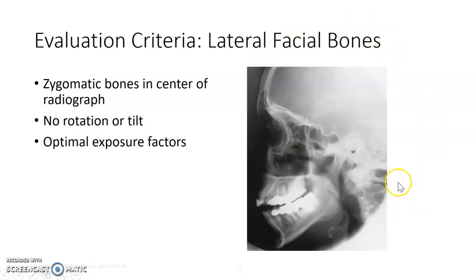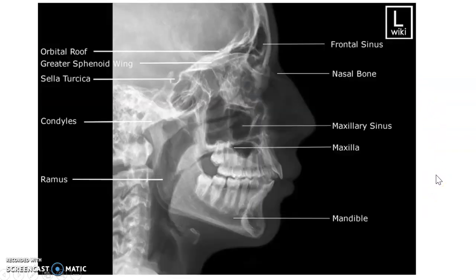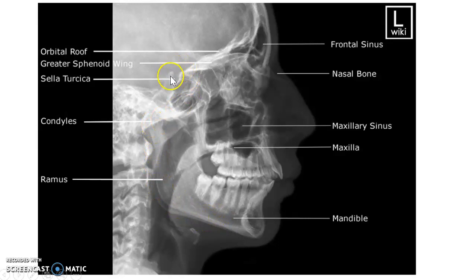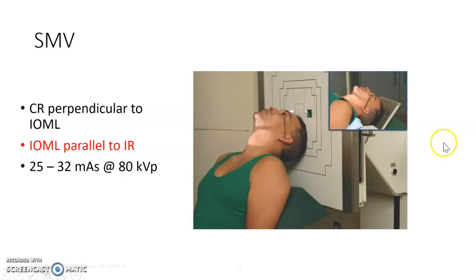On lateral facial bones, we're looking ideally for the zygoma right in the middle — I do not want the entire skull on your facial bones image. This anatomy picture identifies all the landmarks. The lateral identifiers we're looking for include closely superimposed mandible and superimposed sella turcica.